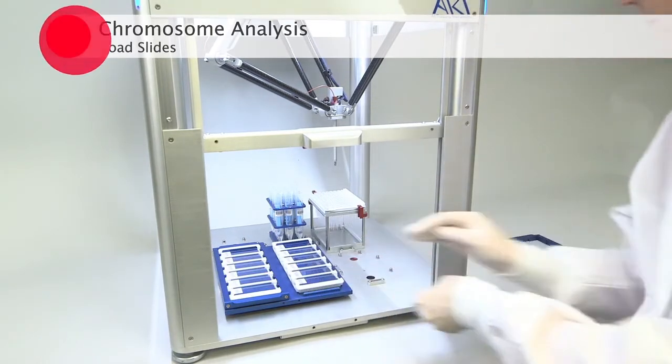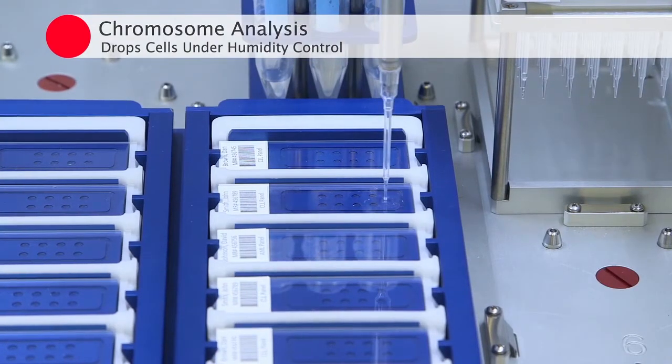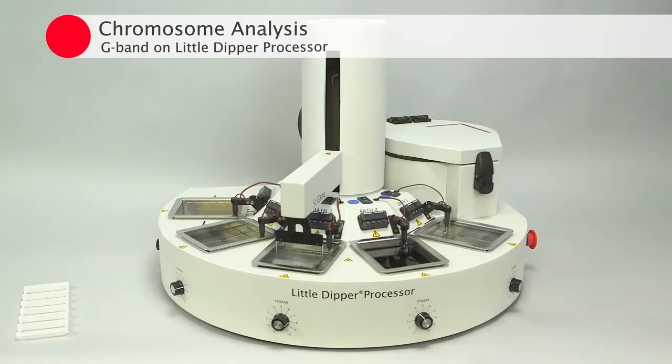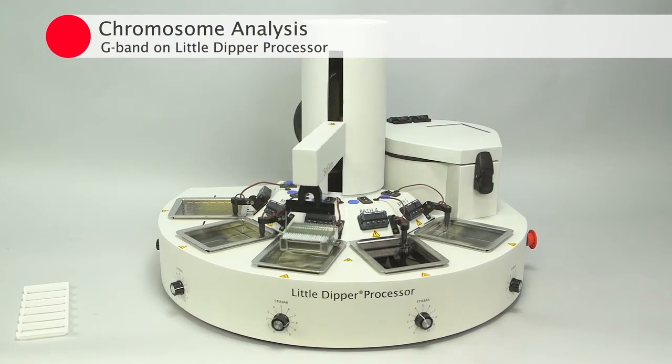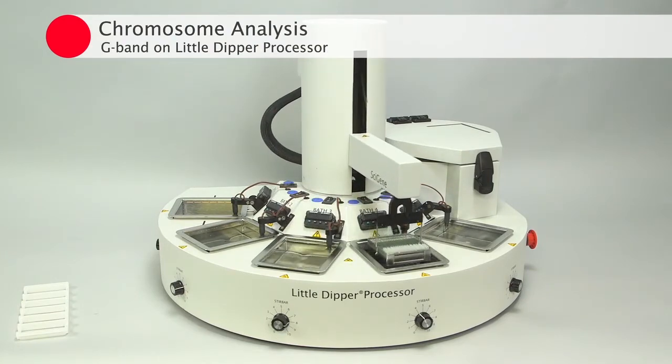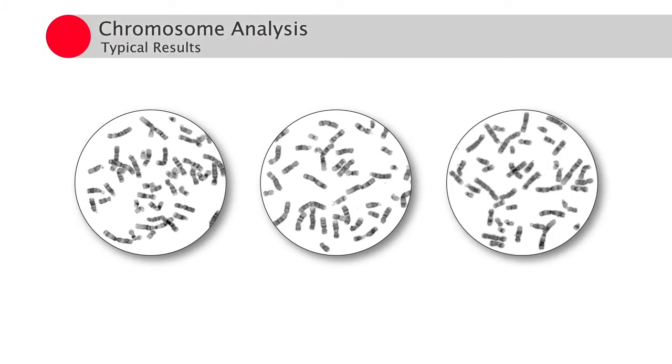The robot dispenses fixed cells under humidity control. Slides are then G-banded on the Little Dipper processor or manually. Precise control of both cell dropping and humidity ensures high-quality metaphase spreads.